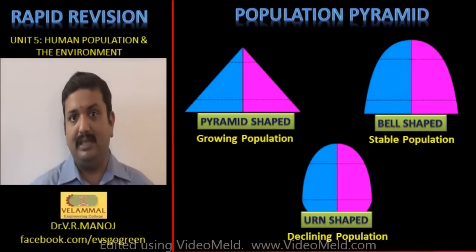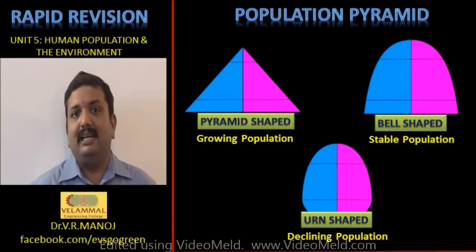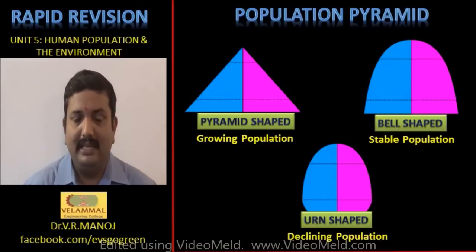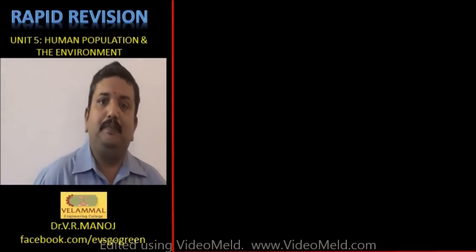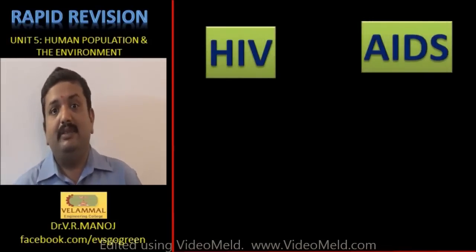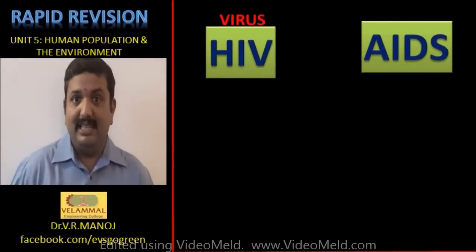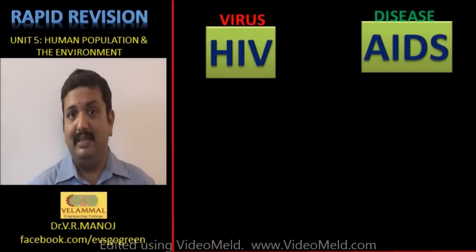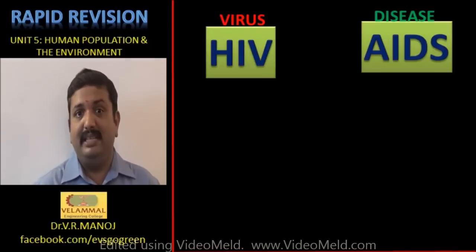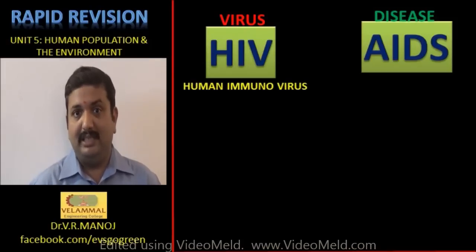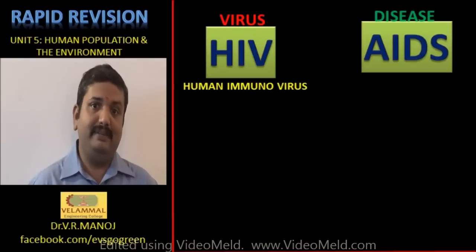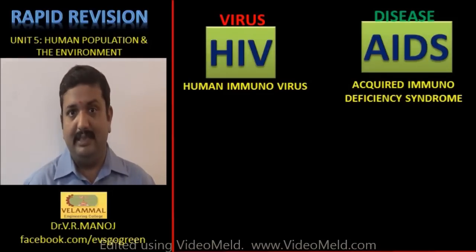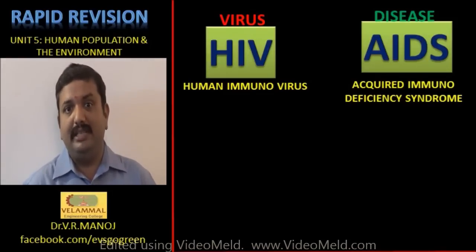Among the miscellaneous topics under human population and environment is the major disease HIV and AIDS. It is very important to remember that HIV is the virus and AIDS is the condition that arises from the infection of a healthy person by the HIV virus. HIV is de-abbreviated as Human Immunodeficiency Virus, which is a retrovirus, and AIDS is de-abbreviated as Acquired Immunodeficiency Syndrome.